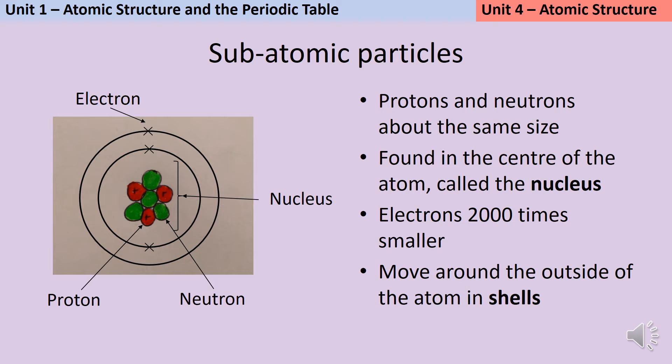Atoms are made of three building blocks called subatomic particles and these are called protons, electrons and neutrons. Protons and neutrons are about the same size as each other and they're found in the centre of the atom in a positively charged ball called the nucleus. It's the same word that we use in cells to describe the part where the DNA is stored, but remember a cell is thousands and thousands of times bigger than an atom is. The electrons are about 2,000 times smaller than the protons and neutrons and they move around the outside of the atom at fixed distances in what we call shells.